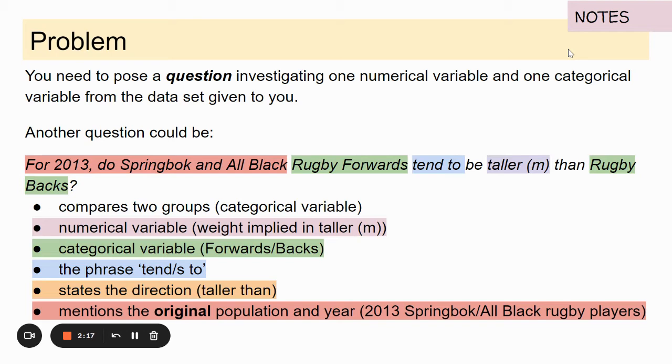That's the taller than and mentions the original population which is the 2013 Springbok All Black rugby players. We need a year because things change every year. We need to make sure that the data group we're talking about has a year attached to it because it's a sample of a bigger population.